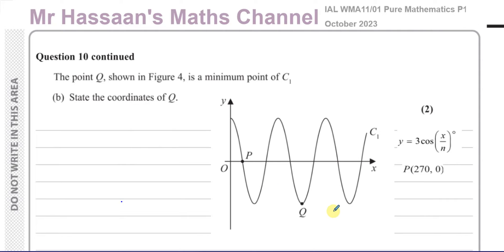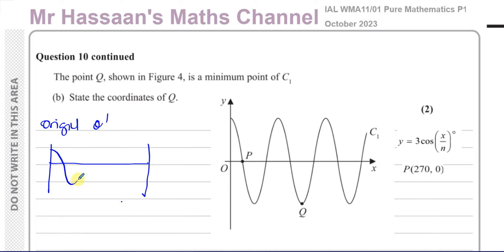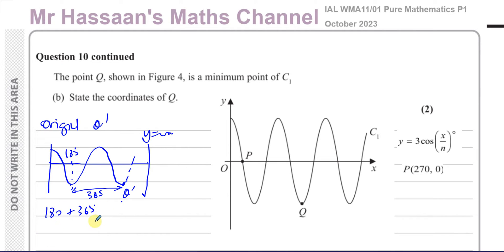Part B says: the point Q shown in figure 4 is a minimum point of C1 — state the coordinates of Q. Let's think about the original position of Q on the basic cosine curve. The cosine curve reaches its first minimum at 180 degrees, then goes up and reaches its second minimum at 180 plus 360 degrees. That second minimum — let's call it Q dash — is where Q originally sits for y equals cosine x. The period of the normal curve is 360, so the second minimum is at 180 plus 360.